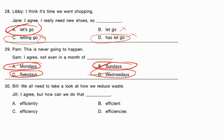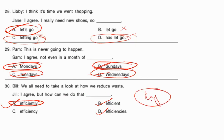'Bill: We all need to take a look at how we reduce waste.' 'Jill: I agree, but how can we do that ___?' The blank needs an adverb describing how the action is done. 'Efficiently' ends in -ly and is an adverb meaning quickly and in an effective manner — that is correct. 'Efficiency' and 'efficiencies' are nouns. 'Efficient' is an adjective. Since we need an adverb here, the correct answer is efficiently.